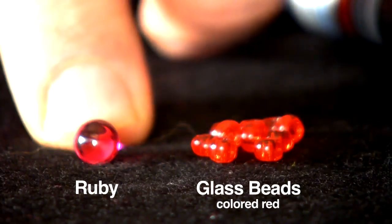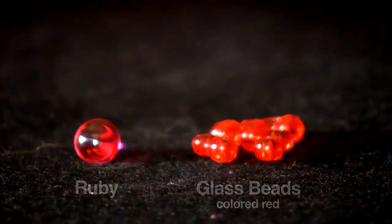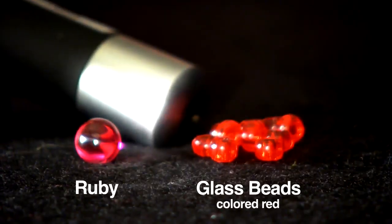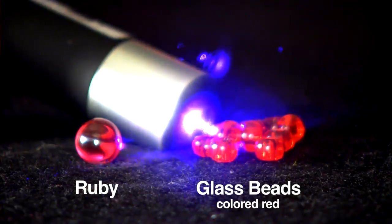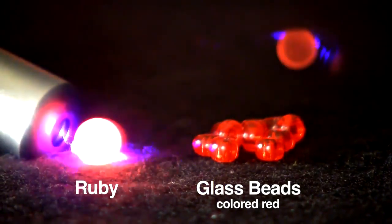Here I have a tiny piece of ruby and some red colored glass beads. When I shine the blue light on the glass beads, nothing much happens but shine it on the ruby and it glows red. Unlike the glow-in-the-dark ball, the light appears immediately and when I shut off the blue light, it disappears.